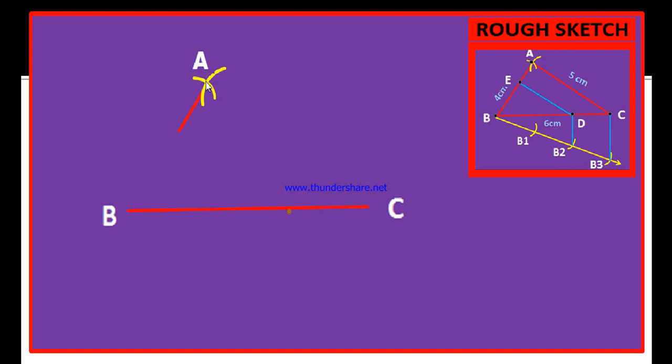Now, join that point A to B and join point C to A so that the triangle ABC is formed. The length of BC is 6 cm, the length of CA is 5 cm and the length of AB is equal to 4 cm.